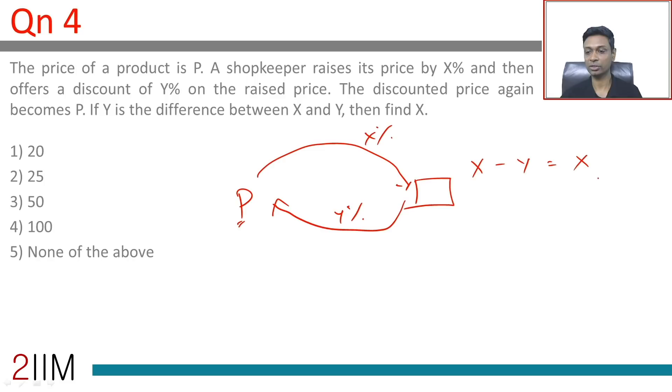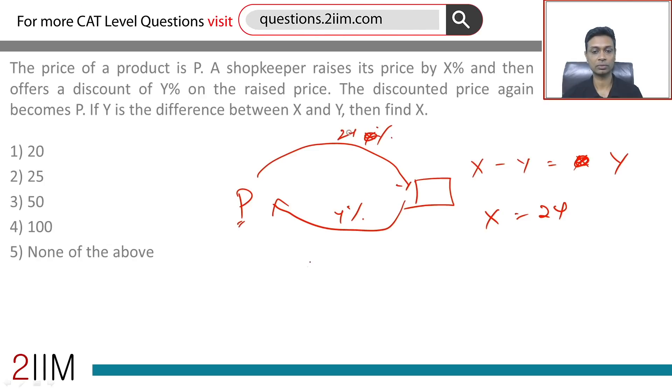X minus Y... sorry, X minus Y is not X, X minus Y is Y, so X equals 2Y. From P, we increase something by 2Y to get to mark price.